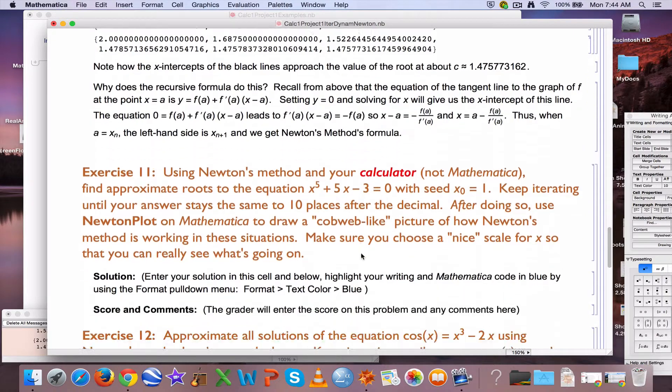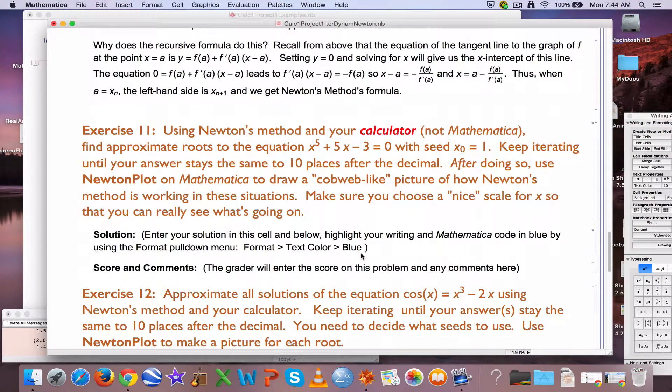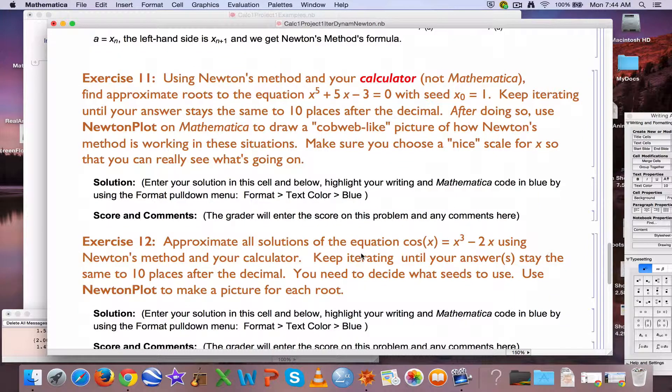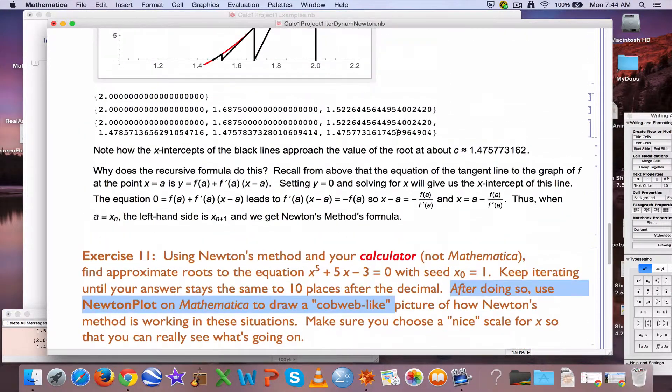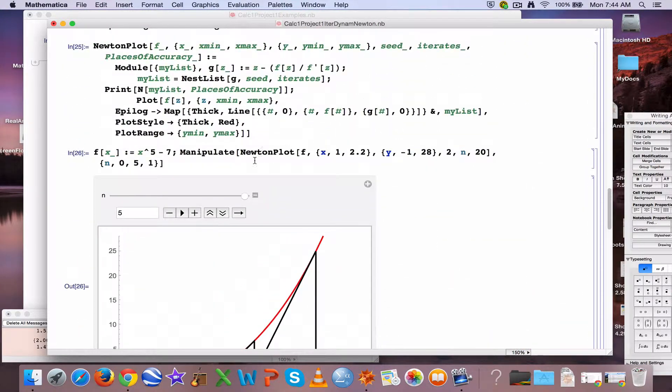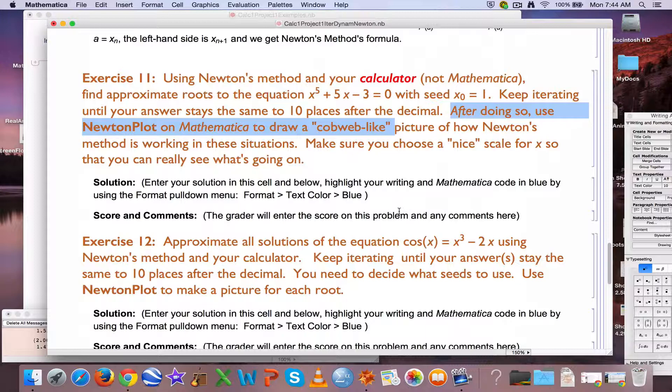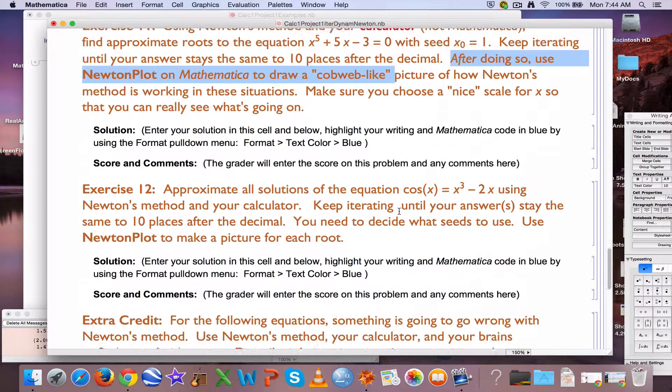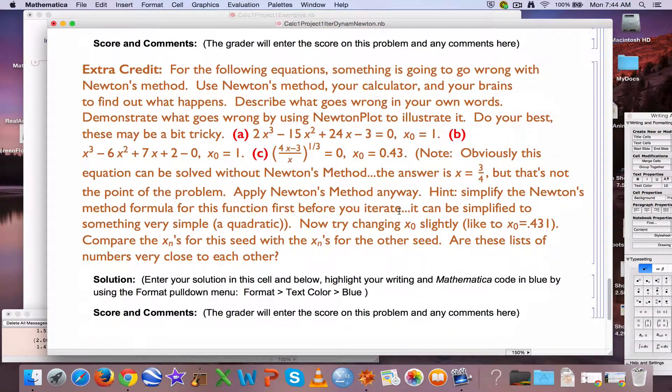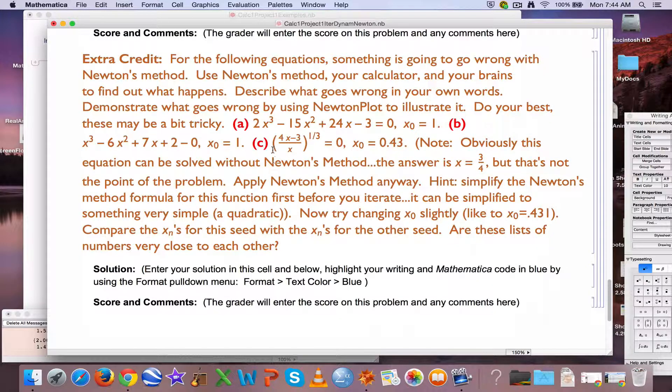In your problems, you are going to be using your calculator to confirm that Newton's method is working for roots of equations. And then after doing that, use Newton's plot to make a cobweb picture. You don't have to use manipulate. You can just use Newton plot without manipulate to make a static picture. You've got a couple exercises where you do that. You also have some extra credit. I will tell you that these extra credit questions are kind of tricky in why they are doing what they're doing, especially this last one. It's kind of strange because it's easy to see the root of that is 0.75, but its behavior is strange.